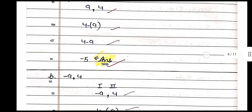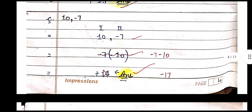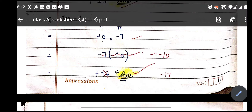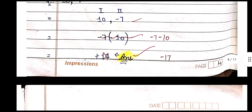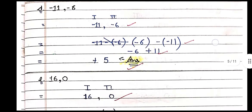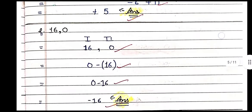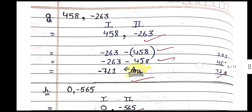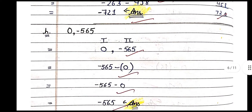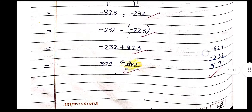Subtract the first integer from the second integer. In the third sum, the first integer is 10 and the second integer is minus 7. So we write minus 7 first, then subtract 10. You can see all the sums and their solutions.